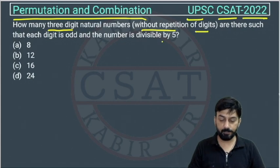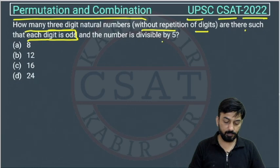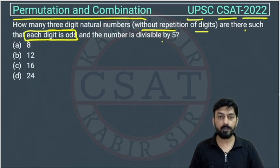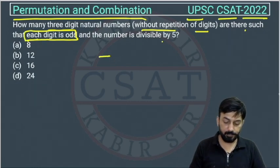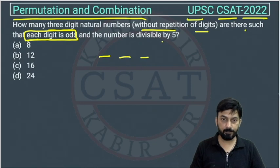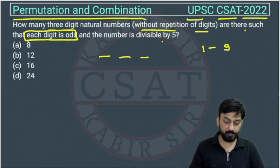There won't be any repetition of digits. Each digit is odd. The question states there will be a three digit number. We have to take natural numbers from one to nine, and each digit must be odd.